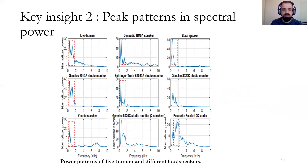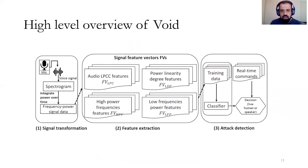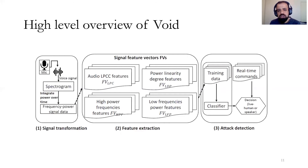Here is the overall overview of Void, which takes a voice sample and converts it into a spectrogram. An accumulated power per frequency vector is obtained and used to compute power linearity degree features, high power frequency features, and low frequency power features. In addition, LPCC features are used as complementary features to further improve performance. All feature vectors are combined and an SVM model is trained for real-time attack detection.